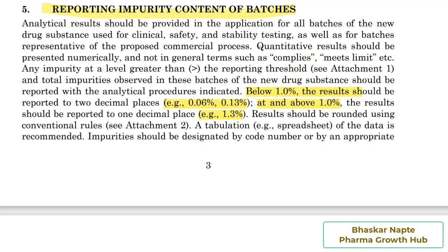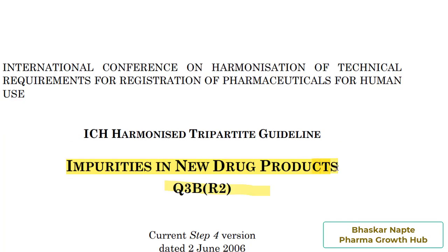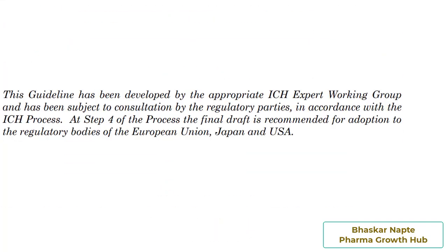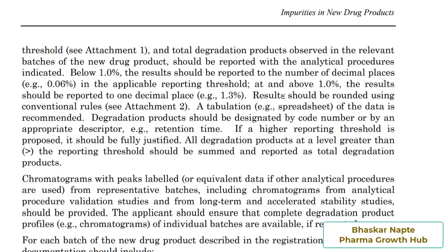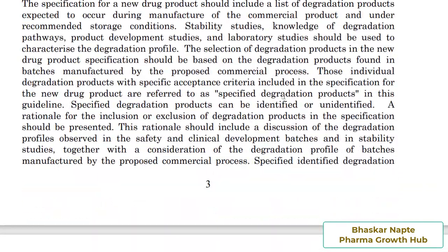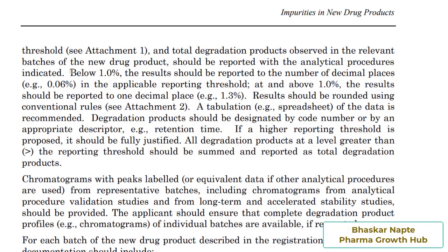Now let us understand the requirement mentioned in ICH guideline Q3BR2, which talks about impurities in new drug products. Let me take you to page number seven of this different guideline. If the impurity content is below 1.0%, the result should be reported to the number of decimal places in the applicable reporting threshold. This is the key difference compared to Q3AR2 for new drug substances.